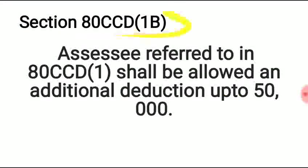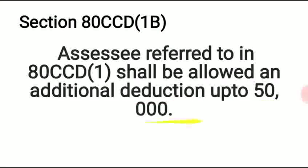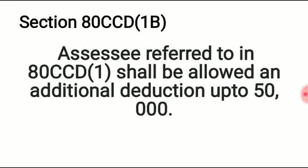Section 80CCD Subsection 1B also applies to NPS subscribers. It provides an additional deduction of Rs. 50,000 for NPS subscribers over and above the 80C limit. For example, if an NPS subscriber's total NPS deduction is Rs. 2,50,000 for the year, then Rs. 1,50,000 is claimed under Section 80CCD(1) and the remaining Rs. 50,000 is claimed under Section 80CCD(1B). This has already been discussed in a previous video.